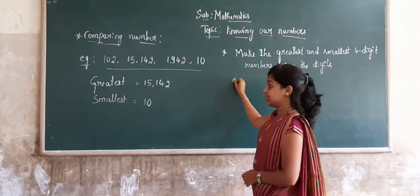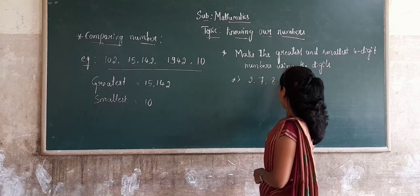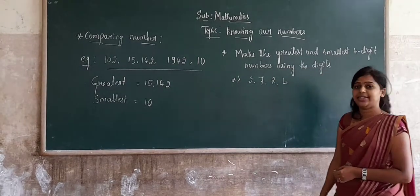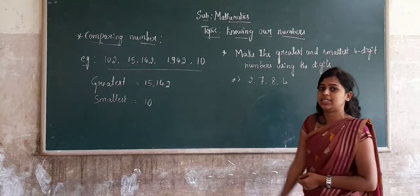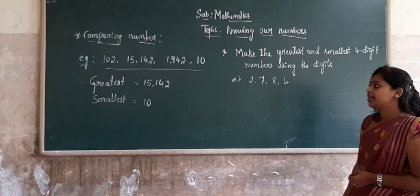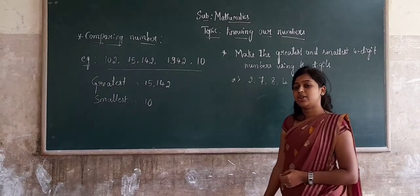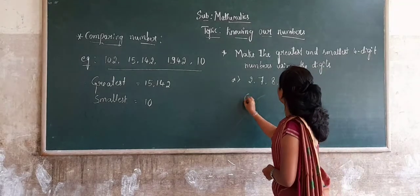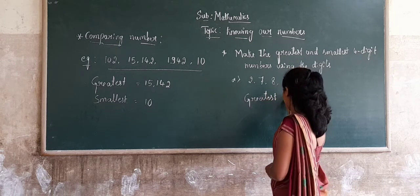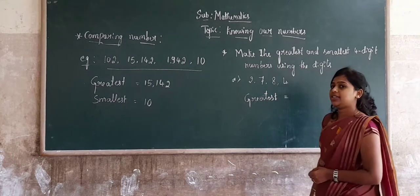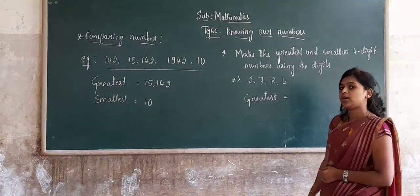Now, consider the given digits: 2, 7, 3, 4. You know how to form the greatest and smallest number from given digits. To form the greatest number, we write the given digits in descending order. To form the smallest number, we write the digits in ascending order. Ascending order means smallest to greatest, and descending order means greatest to smallest. Here we first find out the greatest number by arranging digits in descending order.